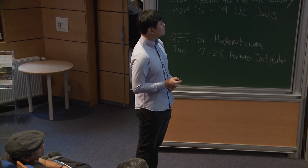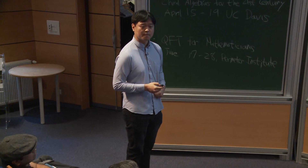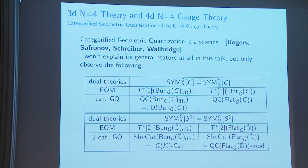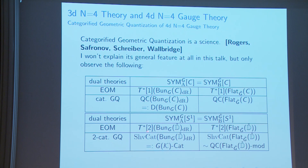From this you get D-modules on Bun_G and quasi-coherent sheaves on the flat G-check moduli. This logic follows through for the case of S^1 (or in our algebraic framework, the punctured disk), giving T*[2] of the de Rham stack and T*[2] of the flat moduli. Taking the two-categorical version of functions — sheaves of categories — gives the expected categories of interest for the A-side and B-side.